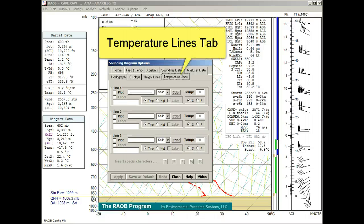The Temperature Lines Tab: here you can specify up to three unique temperature lines, where you can specify line type, color, labels, or even plot the lines in a horizontal or vertical orientation.